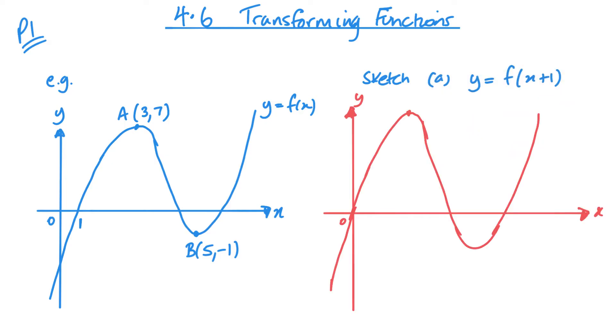So moving one space or one unit to the left will mean that I now cross the origin. My point A is going to be 2, 7, B is going to be 4, negative 1 and that's all I need to do.